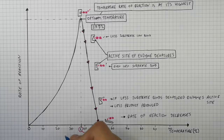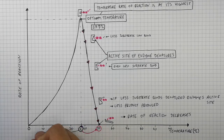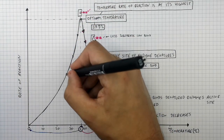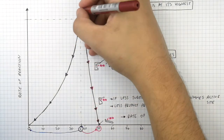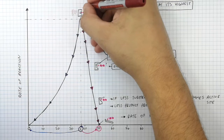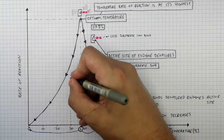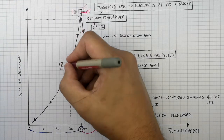Let's now describe what happens if we decrease the temperature below the optimum temperature for the enzyme. We've decreased it from 37 degrees Celsius down to 0 degrees Celsius. The rate of reaction decreases if you reduce the temperature below the enzyme's optimum temperature. At the optimum temperature, there is high kinetic energy stored in the enzyme and the substrate, so they are moving faster. If you decrease the temperature below the optimum, the enzyme does not denature — the enzyme's active site does not denature.